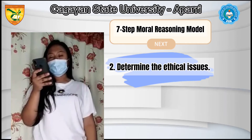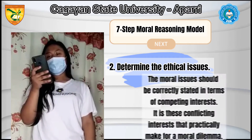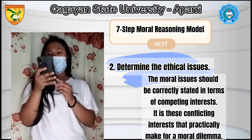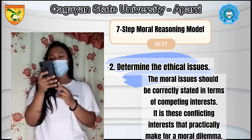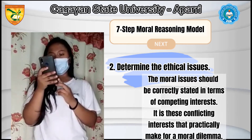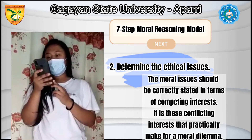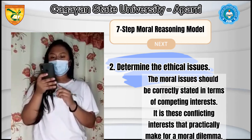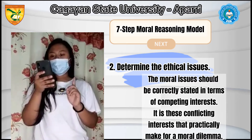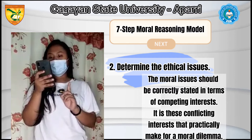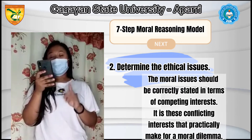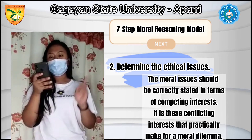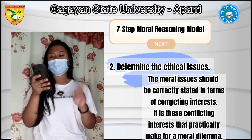Second, determine the ethical issues. The moral-ethical issues should be correctly stated in terms of competing interests. It is these conflicting interests that practically make for a moral dilemma. For example, after knowing the facts about the rumors, you need to identify the problems and issues that cause a conflict.